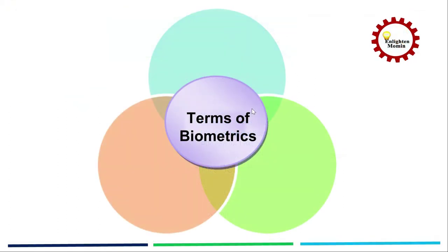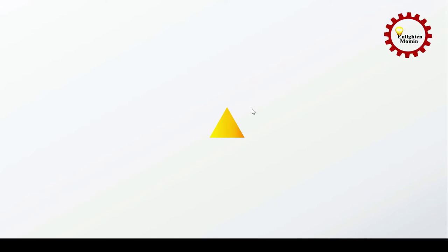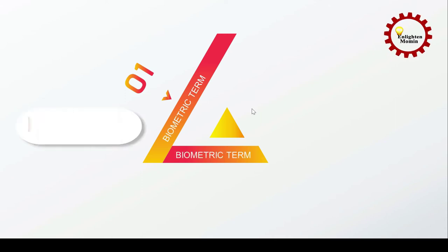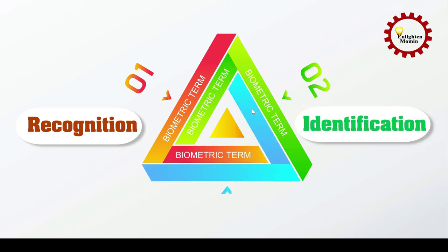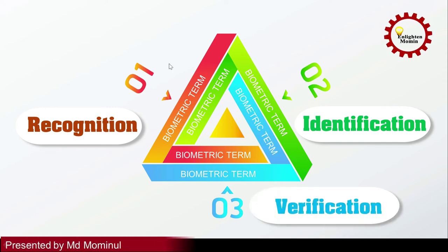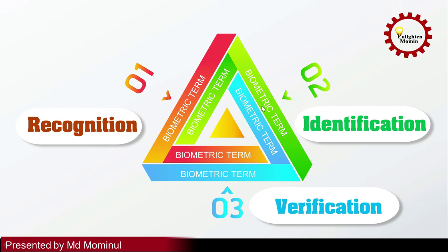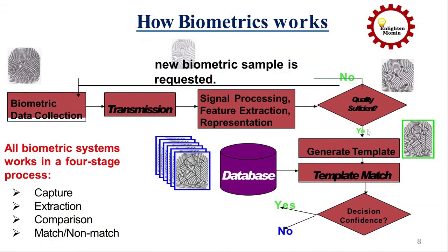There are basically three terms of biometrics. Number one: recognition. Number two: identification. Number three: verification. The biometric system first recognizes you, then identification takes place, and finally verification. If recognition and identification are done and matched to you in the database, it shows a verified message. If not matched, it shows a rejection message. These are the three terms of the biometric system.